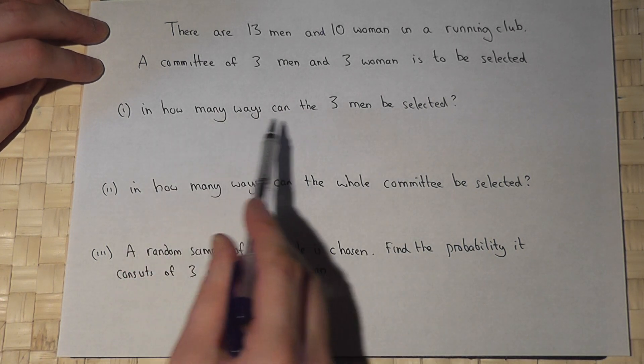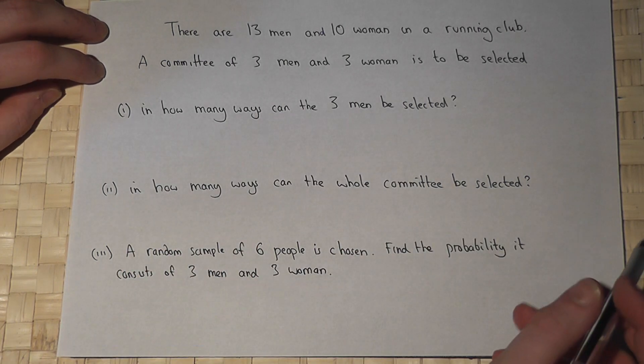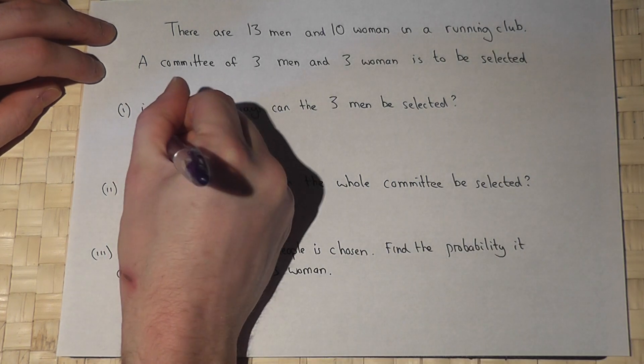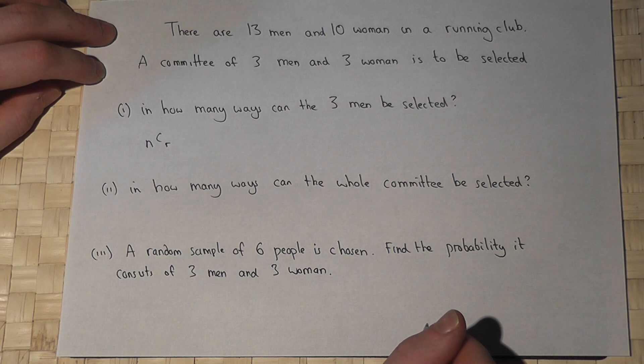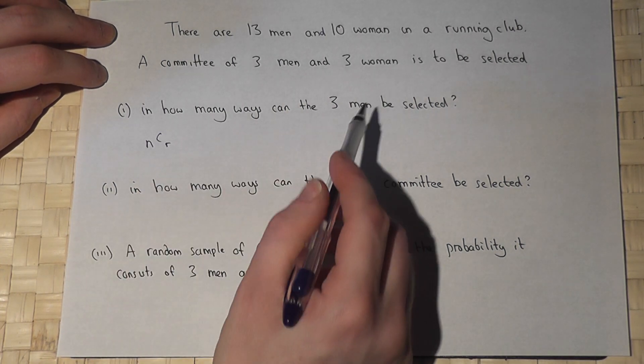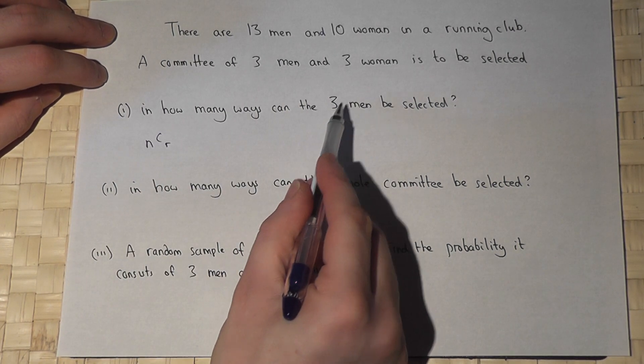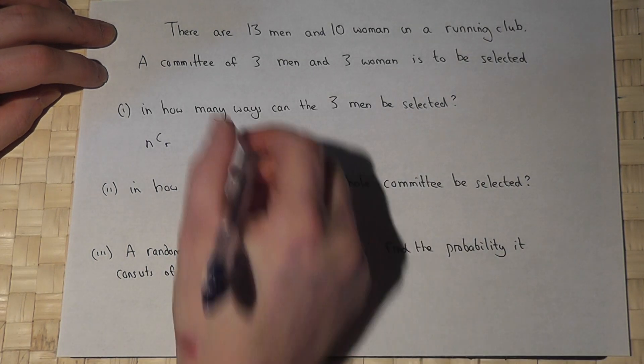Part one asks: in how many ways can the three men be selected? This is where the nCr button comes in, because this allows us to find the number of ways of choosing, in this case, three people out of 13.